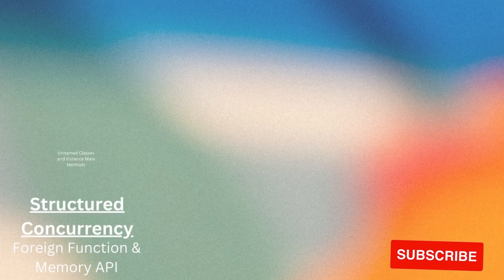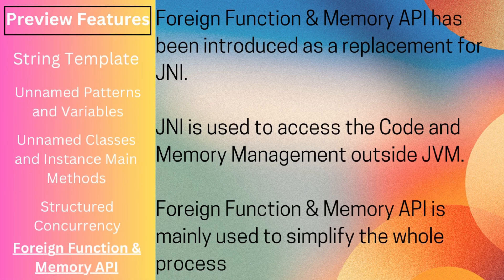Suppose you want to access code outside the JVM — it could be a C library or memory management outside the JVM. Previously you had to use Java Native Interface (JNI), which is complex, error-prone, and slow. The Foreign Function and Memory API has been introduced as a replacement for JNI in Java 21. Very few programmers will work with it directly, so I won't go into further detail here — let me know in the comments if you'd like a dedicated session.